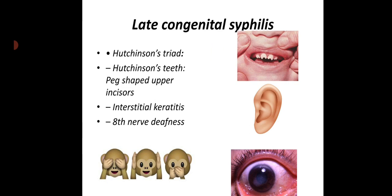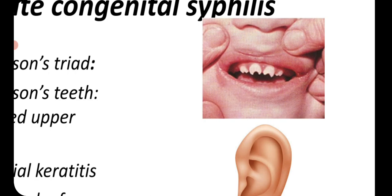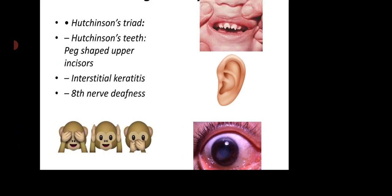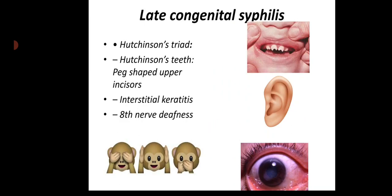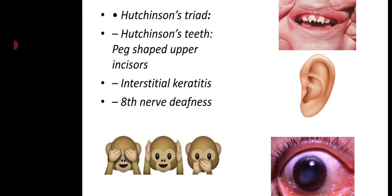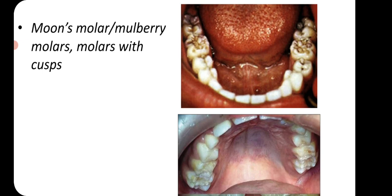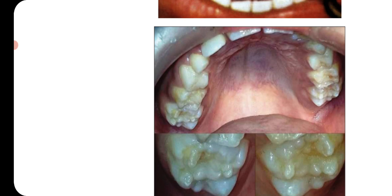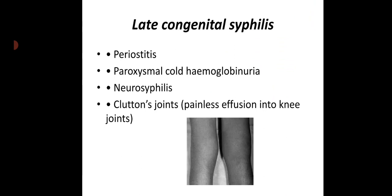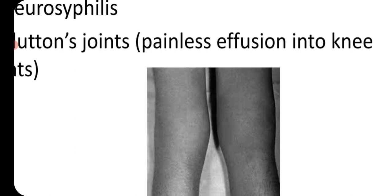Late congenital syphilis: the typical feature is Hutchinson's triad — Hutchinson's teeth (peg-shaped upper incisors), interstitial keratitis, and eighth nerve deafness — affecting the eye, mouth, and hearing. Another feature is Moon's molars or mulberry molars: molars with multiple cusps. Other features include periostitis, paroxysmal cold hemoglobinuria, neurosyphilis, and Clutton's joints, which are painless effusions of the knee joints.